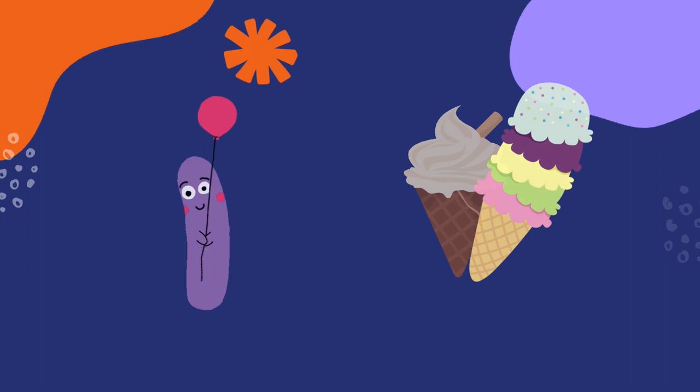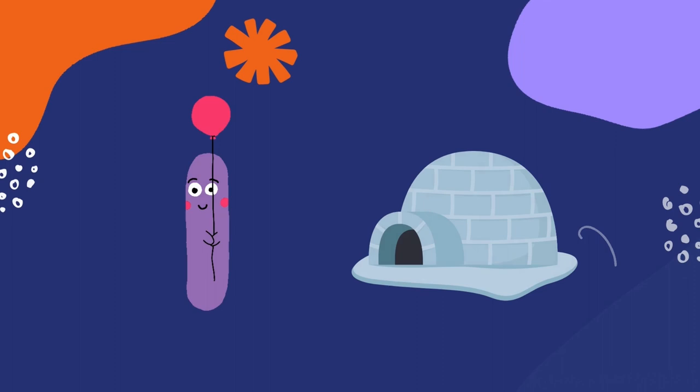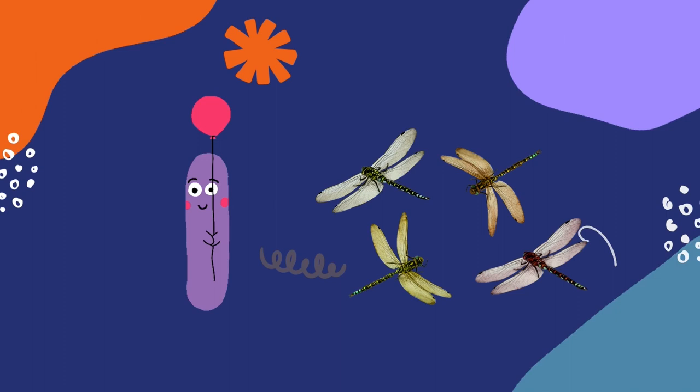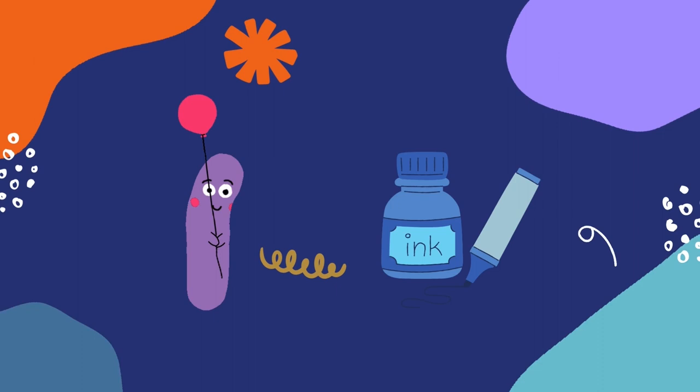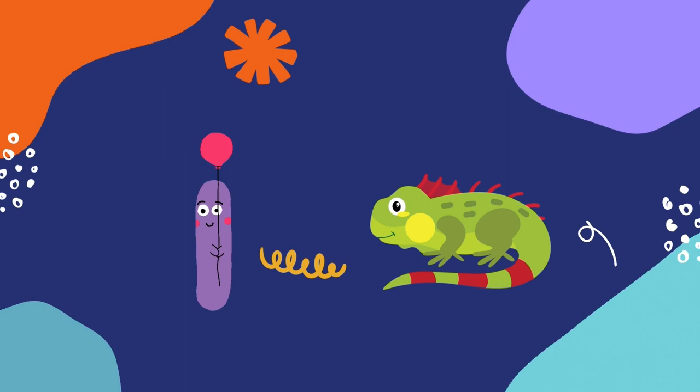I is for ice cream. I is for igloo. I is for insects. I is for ink. I is for iguana.